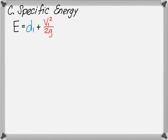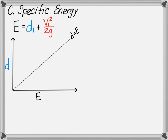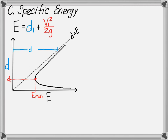A specific energy diagram can be sketched to help illustrate this point. The y-axis includes the flow depth, while the x-axis includes the specific energy. When the specific energy is equal to the flow depth, we have no velocity head, and a 45-degree line can be drawn on our diagram. For a specific flow rate or unit discharge, the specific energy curve is a parabolic shape, which never reaches the 45-degree line or the x-axis. The minimum energy will occur at what we define as critical depth. The distance from the y-axis to the 45-degree line is the flow depth, and the distance from the 45-degree line to the specific energy curve is the velocity head.